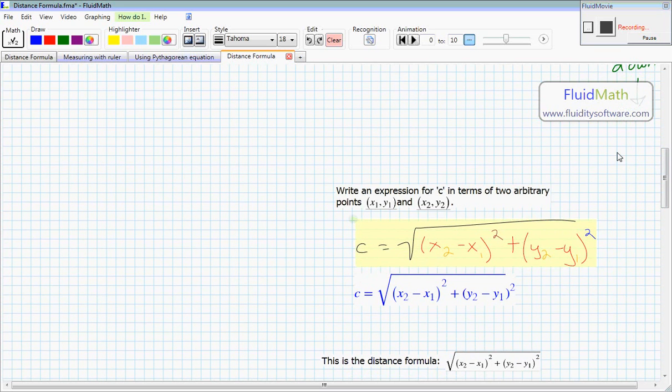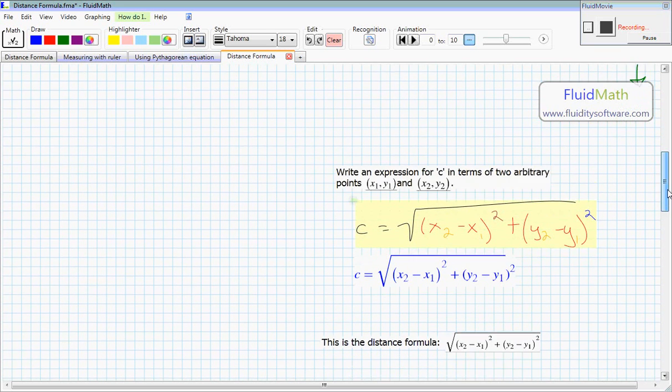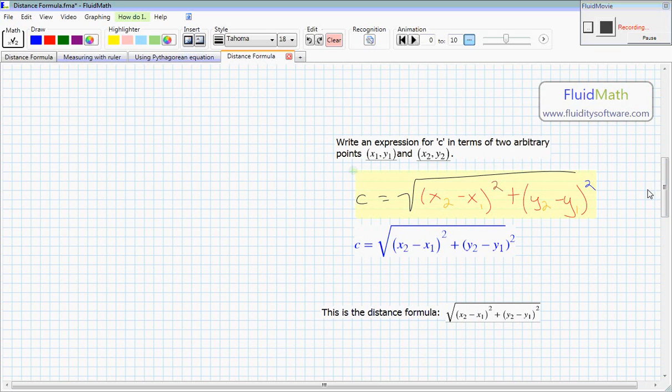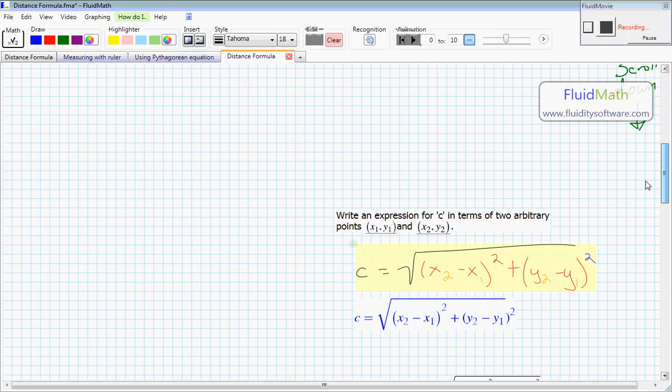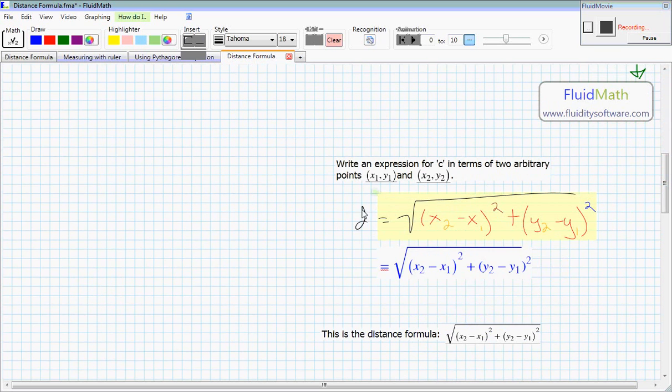And this is saying c is equal to that because c was the hypotenuse of the triangle. But often it's written as d, as in distance, is equal to the square root of that. And this is the distance formula.